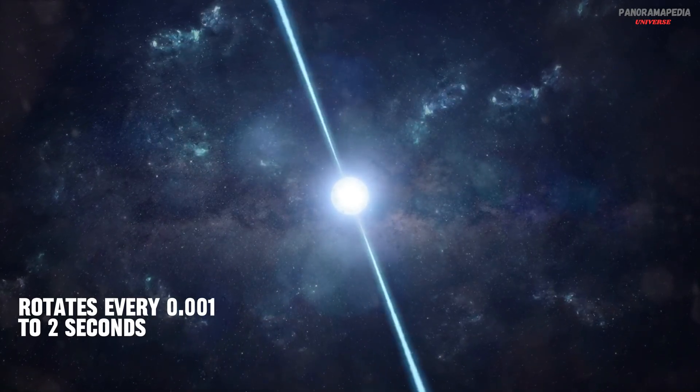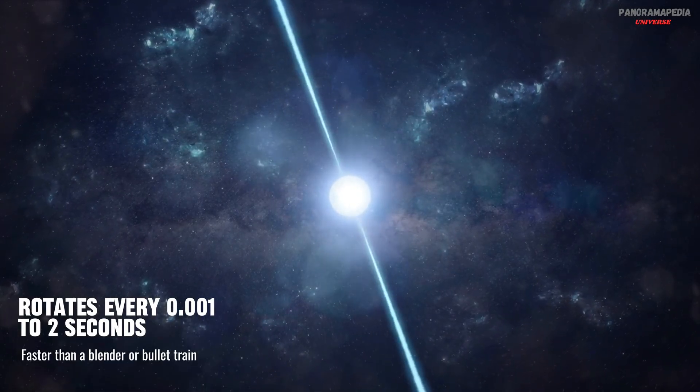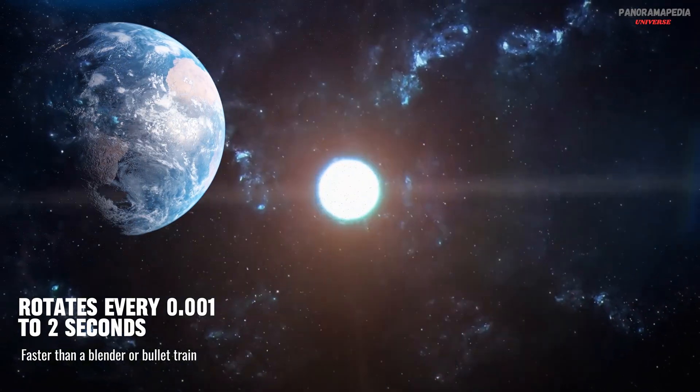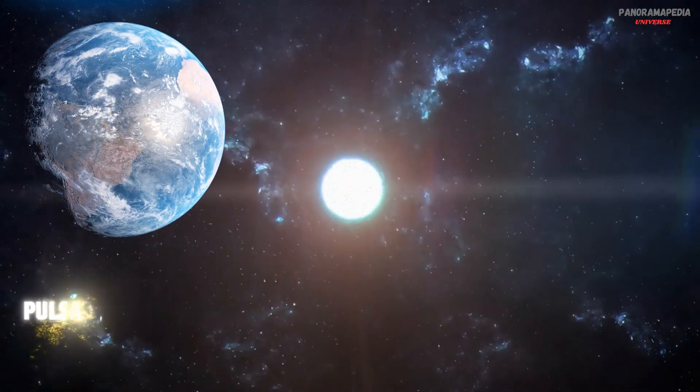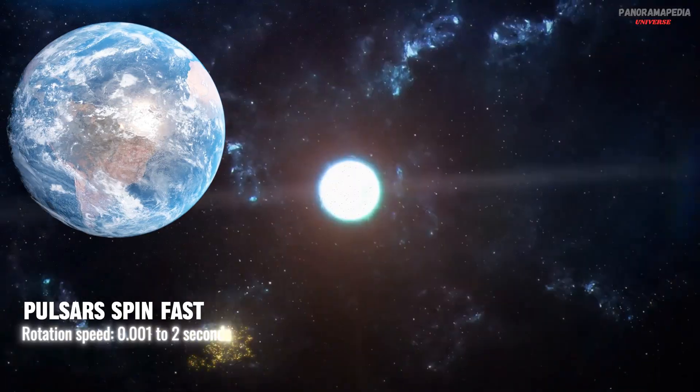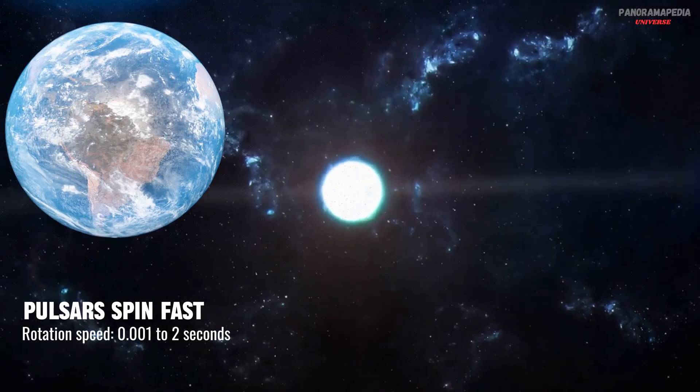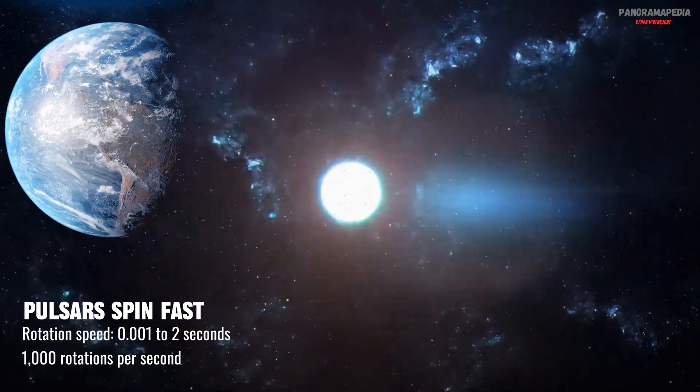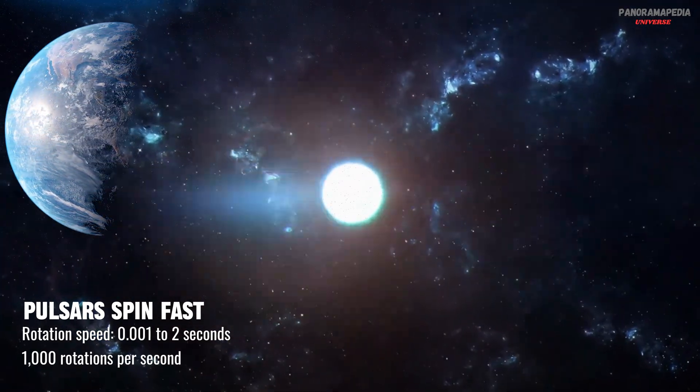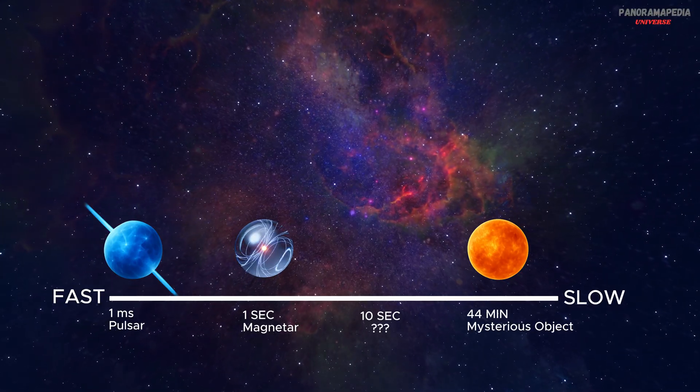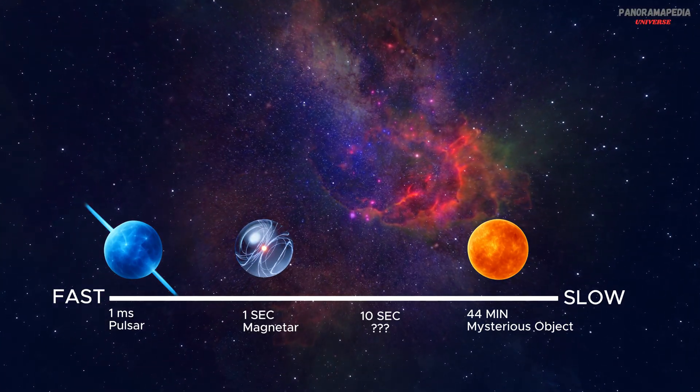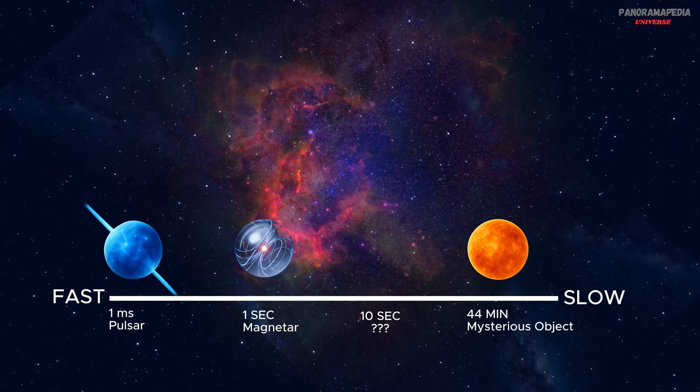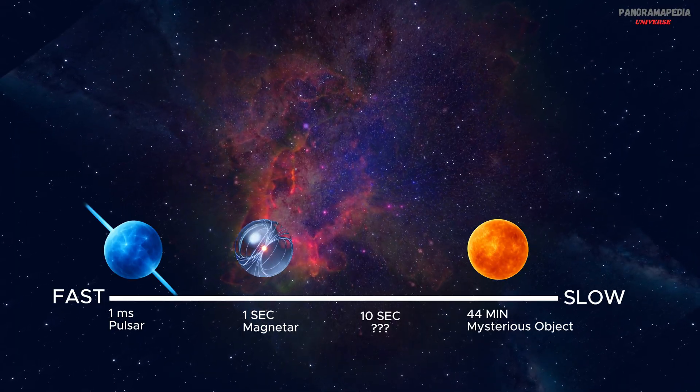First guess: is it a pulsar? Pulsars are rapidly spinning neutron stars. When they rotate, they emit beams of radio waves from their magnetic poles. Think of them like cosmic lighthouses. Their beam sweeps past Earth, and we detect a pulse. The problem? Pulsars spin fast, from milliseconds up to a few seconds. A 44-minute interval is thousands of times too slow.